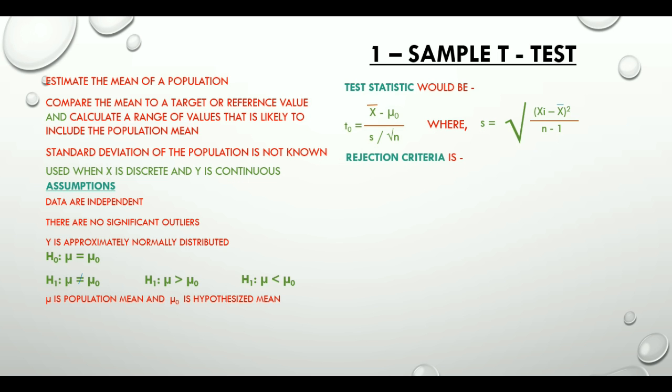Rejection criteria for a 1 sample t-test is based on the comparison between the test statistic, i.e. t sub zero, and a critical value that is calculated from the t-distribution table using the significance level alpha and the degrees of freedom which is n minus 1.